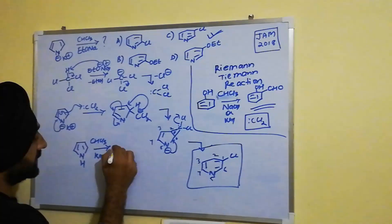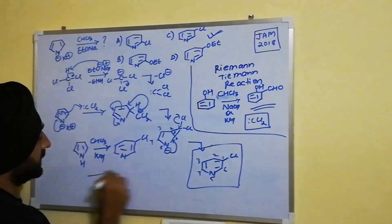Whenever we treat pyrroles with chloroform and KOH, it also leads to the formation of 3-chloropyridines.